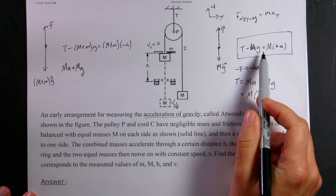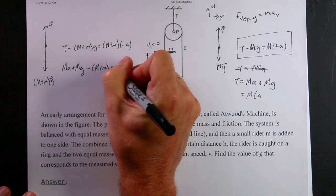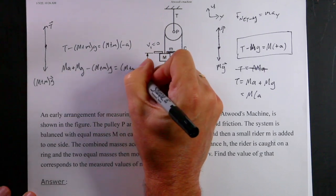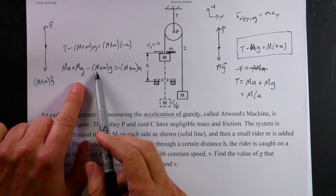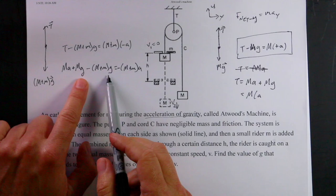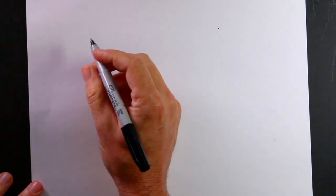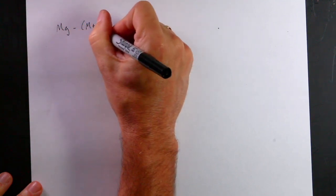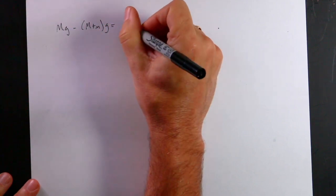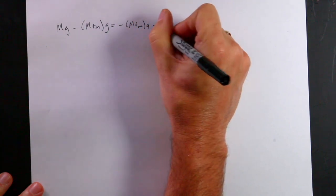Yeah, that's right, minus M plus M G equals M plus M minus A. Okay, so now I have an equation that just depends on, that does not have T in it, and I can solve this for G. So let's do that. I'm going to switch to another piece of paper. So I'm going to get all the G's to one side, and all the A's to the other side. So I have M G minus M plus M G equals negative M plus M A minus M A.